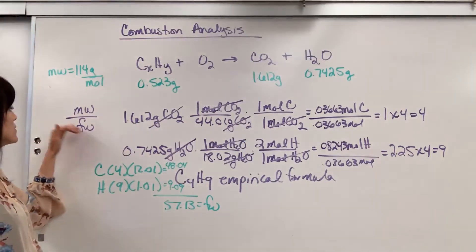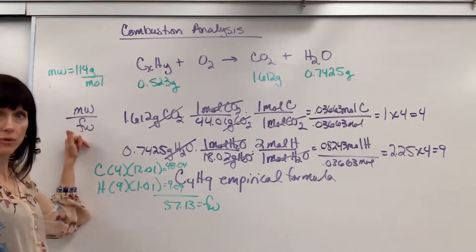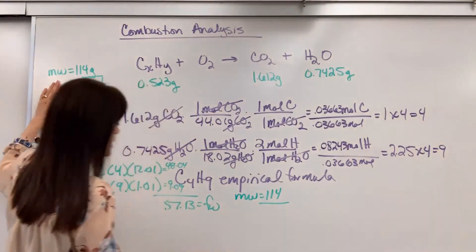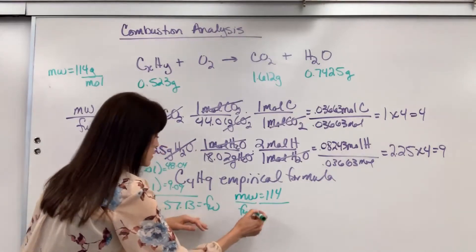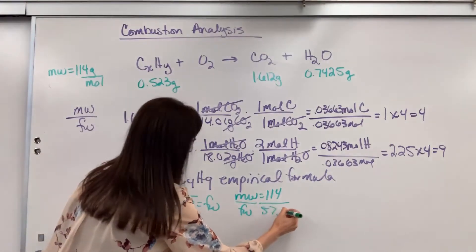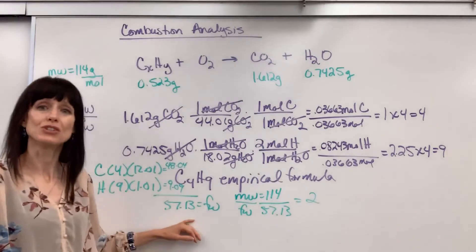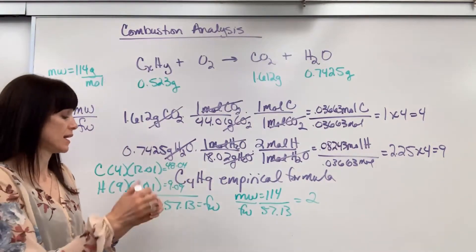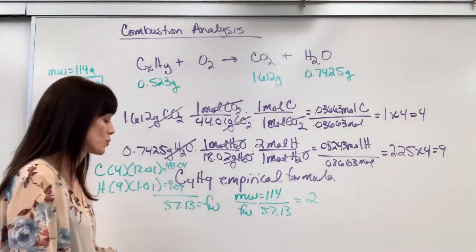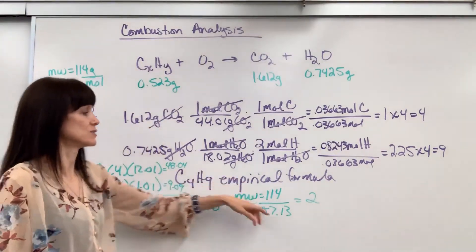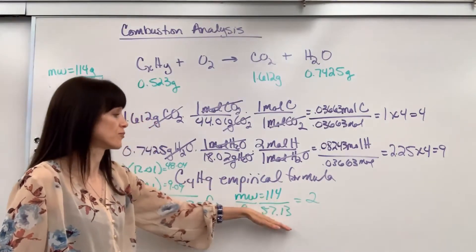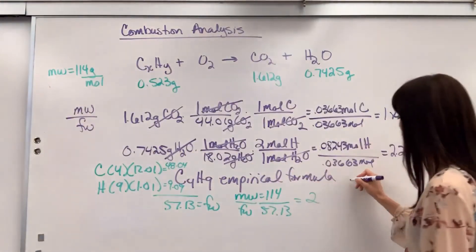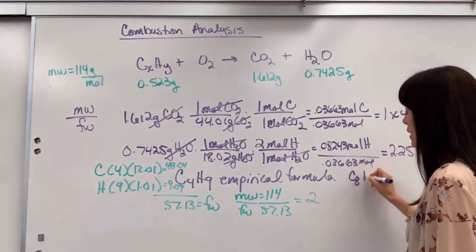So if I come back here, molecular weight divided by formula weight. The molecular weight is 114, and the formula weight was 57.13. That is really close to 2. That means in nature, this compound has twice the amount of atoms as what we see. It has two times that formula weight. So you just take the subscripts and multiply those by two. This will be C8H18.